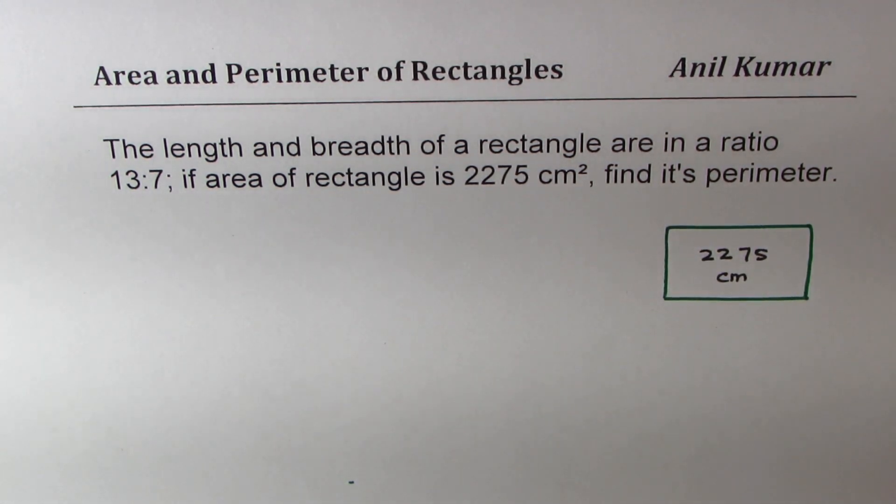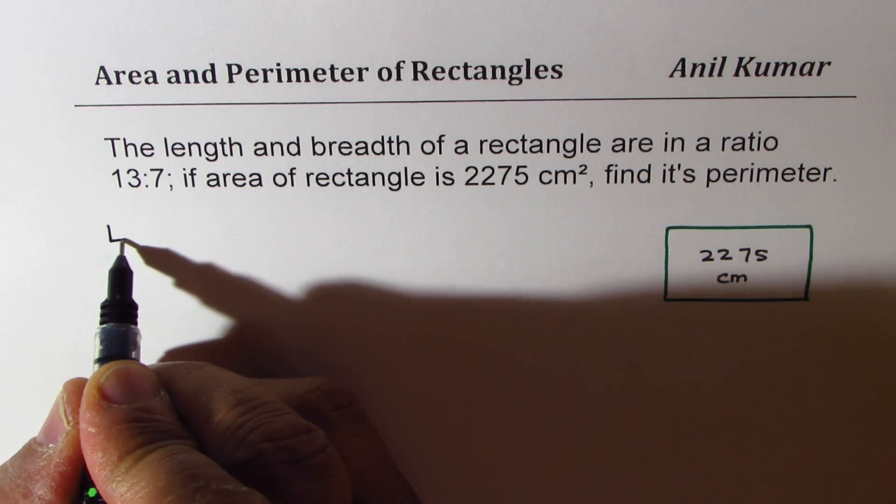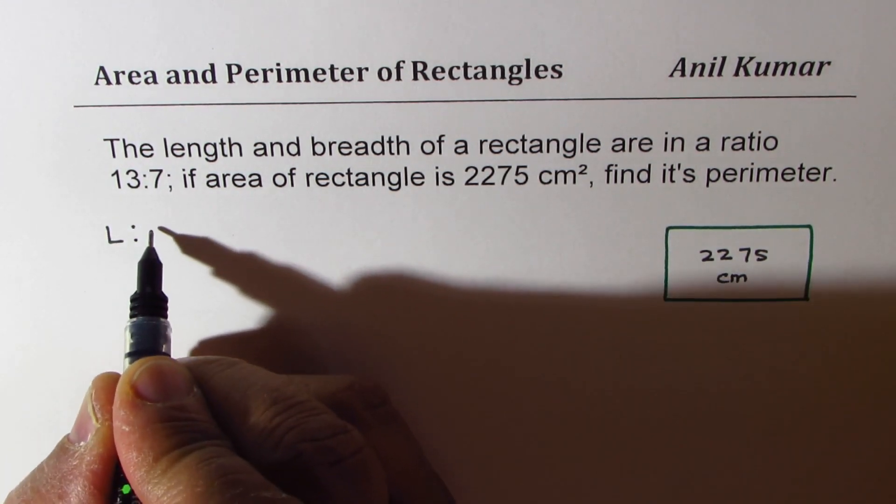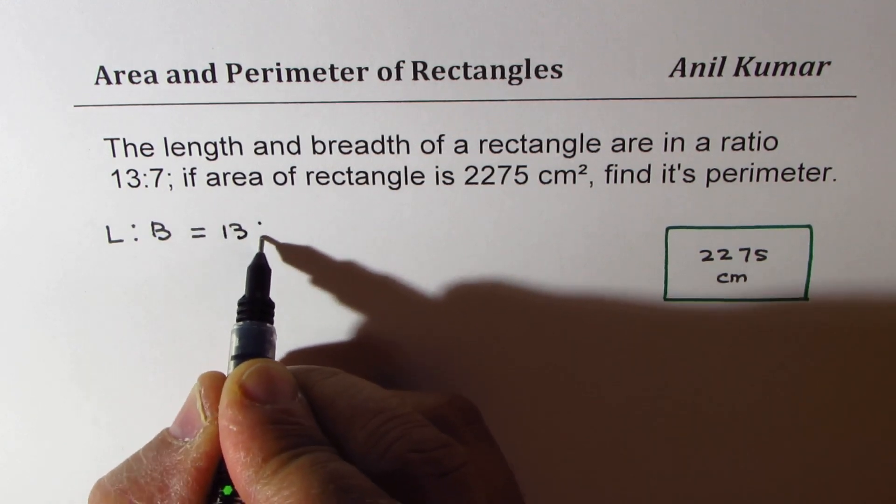Now when we say that the ratio of length and breadth is 13 to 7, what does it mean? We are saying ratio of length and breadth is equal to 13 to 7.